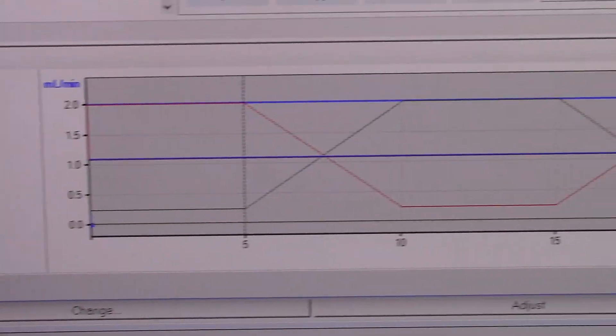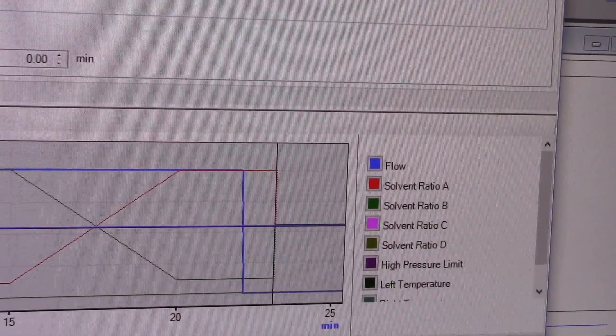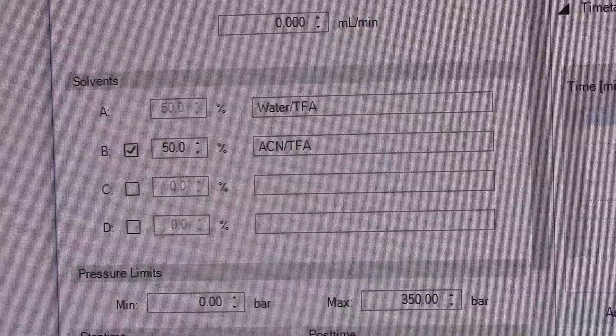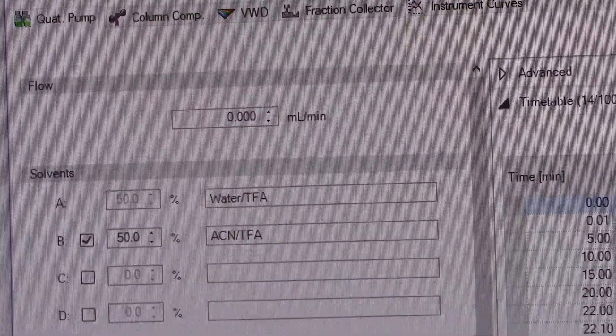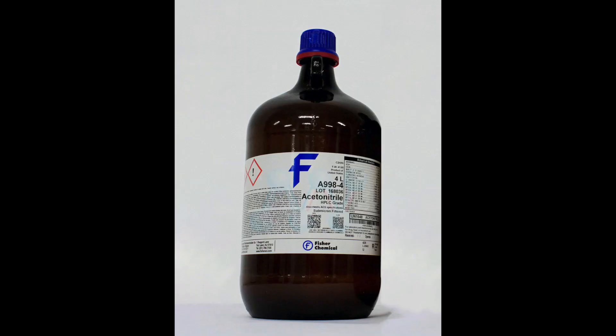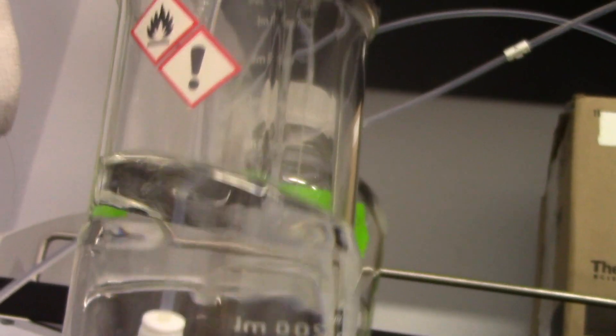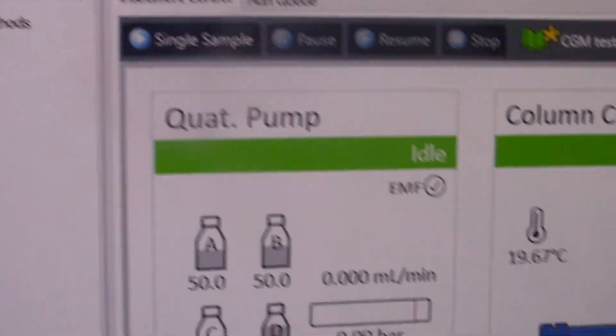You can customize how long the HPLC will run and which solvents to use. Our solvents are water with 0.1% TFA and acetonitrile with 0.1% TFA. The TFA prevents the growth of any microorganisms. Check the volume of these solvents and make sure it corresponds to the computer.